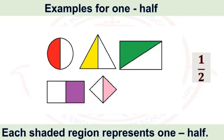Let us take a few more examples. Here you can see five different shapes, and each shape is divided into two equal parts. Each one part of the shape is shaded. Therefore the fraction of each shaded region of the given shapes is represented by one half.